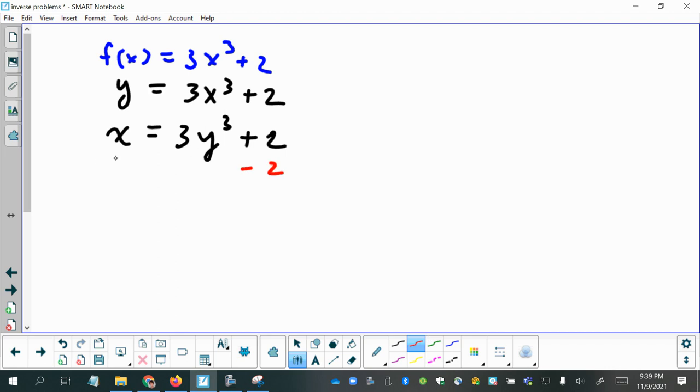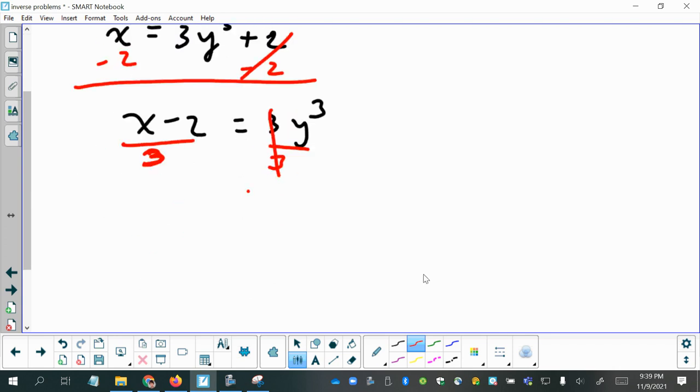So we're going to subtract 2 on both sides. Then we're going to have x minus 2 equals 3y cubed. And then we're going to divide by 3. We're just trying to get y alone. And then I'm going to write it this way now. y cubed equals x minus 2 quantity over 3.